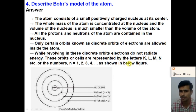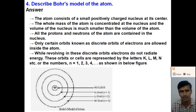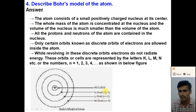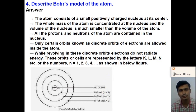Bohr represented these orbits by the K, L, M, N shells, or we can say the first, second, third and fourth orbits. The positive charge and mass of the atom is concentrated at a very small volume at the center, and electrons revolve in circular orbits in different shells. For more detail about Bohr's model of an atom and how electrons are distributed in different orbits, see the previous video.